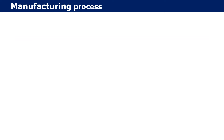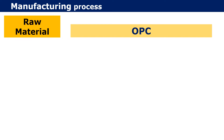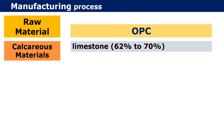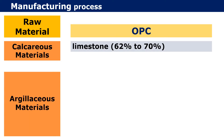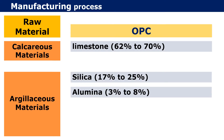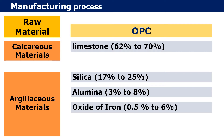Now let us see the manufacturing process. The raw materials used to manufacture OPC are calcareous material containing limestone at 62 to 70 percent, argillaceous material containing silica which ranges between 17 to 25 percent, aluminium 3 to 8 percent, and oxide of iron which will be around 0.5 to 6 percent.